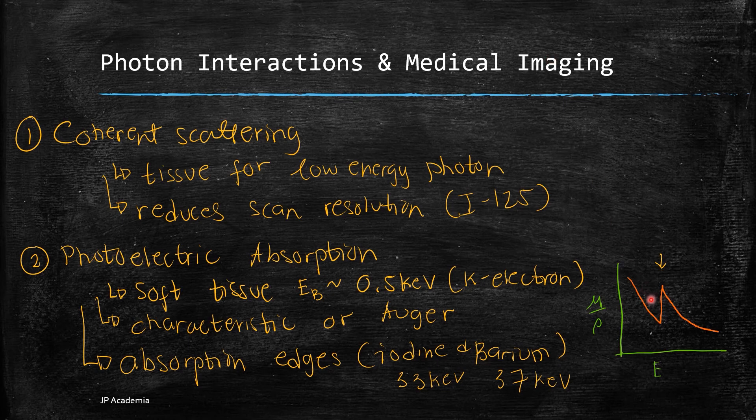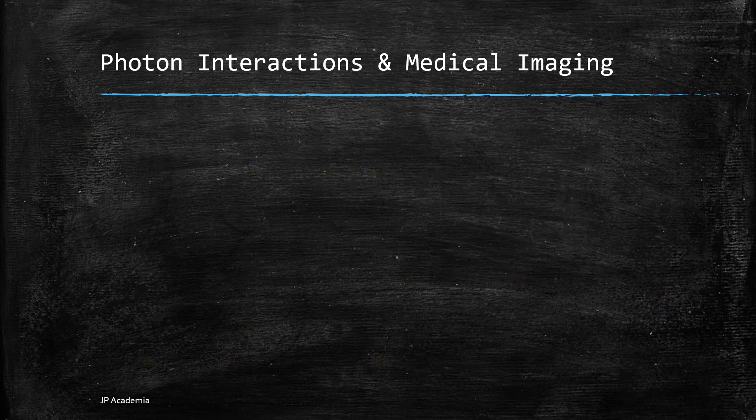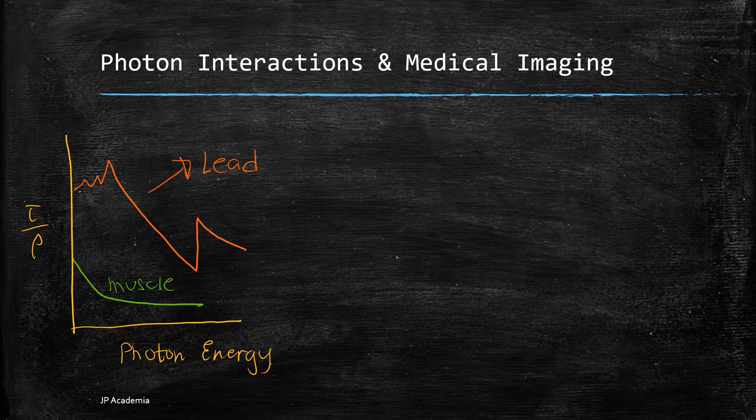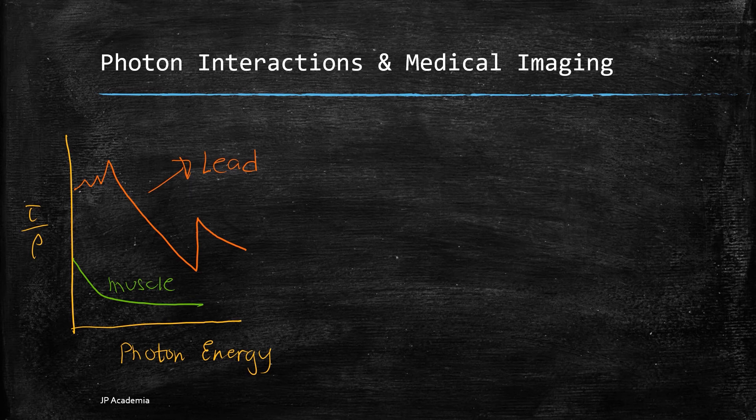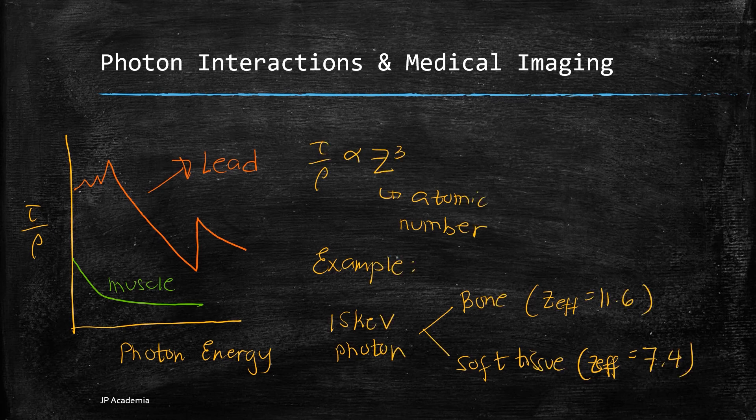It means that the photon energy should at least equal or exceed these energies to interact predominantly with the K-shell electrons. So I have here a drawing. We have the photoelectric mass attenuation coefficient for both lead and soft tissue or muscle with photon energy at the x-axis. It also shows the absorption edges for lead related to the binding energies of electrons in the inner shells. Note that photoelectric mass attenuation coefficient varies approximately to Z-cube.